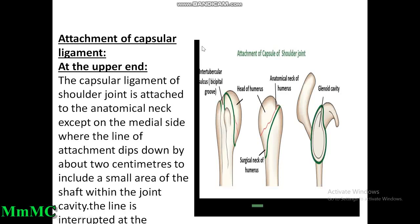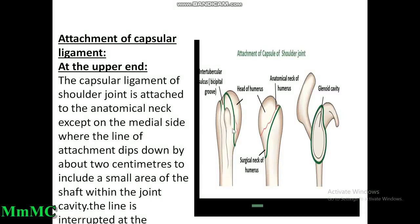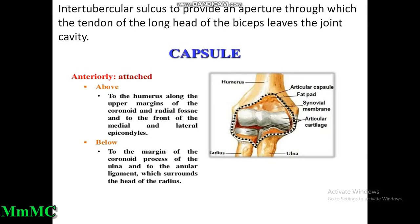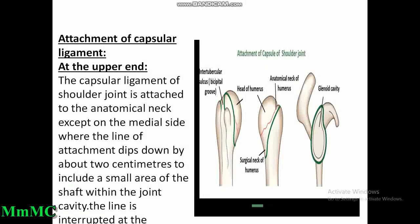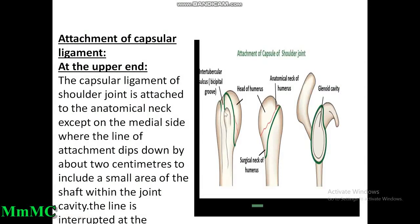Attachment of the capsular ligament at the upper end: the capsular ligament of the shoulder joint is attached to the anatomical neck, except on the medial side where the line of attachment dips down by about two centimeters to include a small area of the shaft within the joint cavity. The line is interrupted at the intertubercular sulcus to provide an aperture through which the tendon of the long head of biceps enters the joint cavity. The capsular attachment is deficient for passage of the long tendon of biceps brachii.